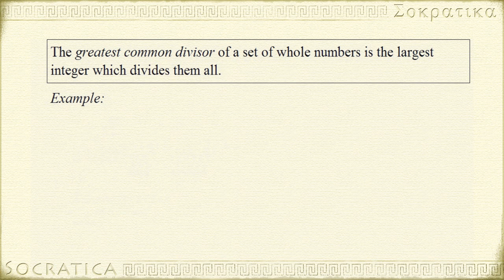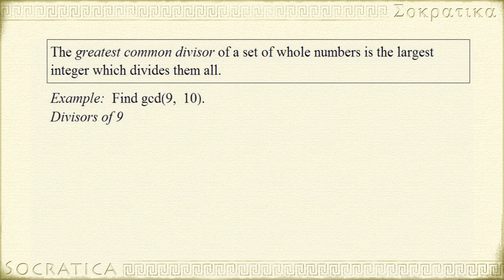Let's see another example. Let's find the greatest common divisor of 9 and 10. Once again, we start by finding the divisors of 9. Once again, 1 divides every integer. 2 gives you a remainder of 1, it's not a divisor. 3 divides 9 evenly, so 3 is a divisor. 4 gives you a remainder of 5, so on. The next integer is 9, and every number divides itself.